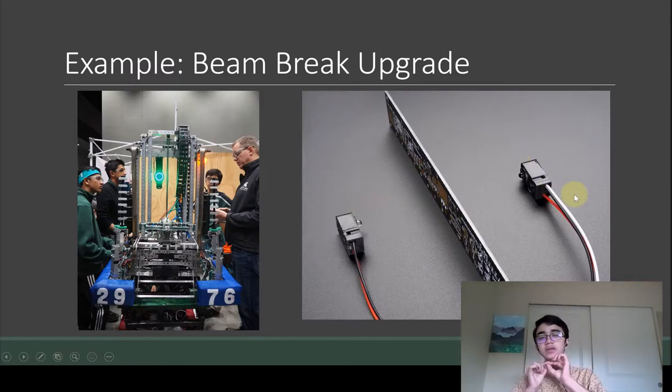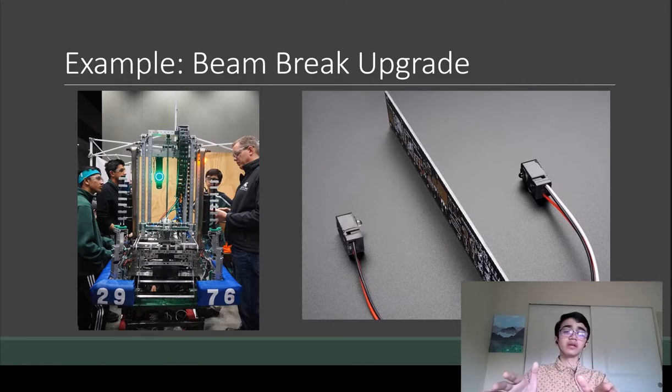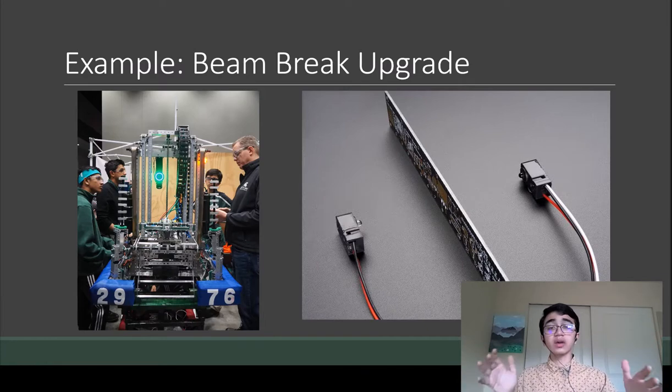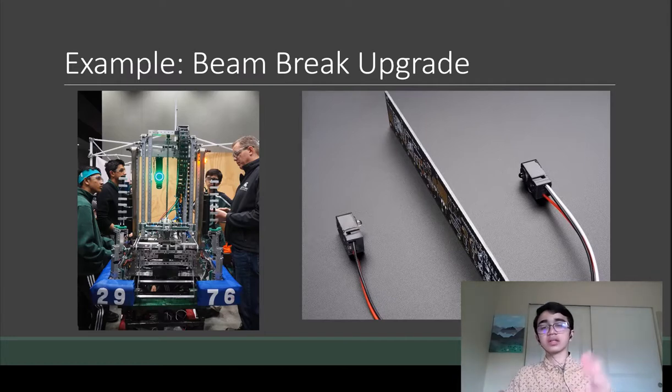This transmitter is constantly emitting a beam of infrared light. As long as that receiver is picking up the infrared light, it knows that there's nothing in between it. However, when the receiver stops receiving this infrared light, it detects that there's something in between it.